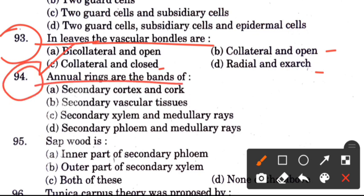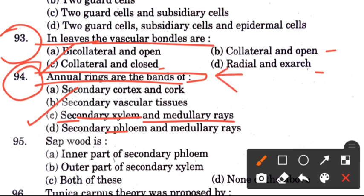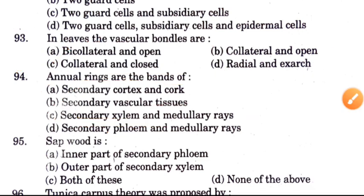Question 94: Annual rings are bands of — options are secondary cortex, secondary vascular tissues, secondary xylem and medullary rays, secondary phloem and medullary rays. The answer is C, secondary xylem and medullary rays.